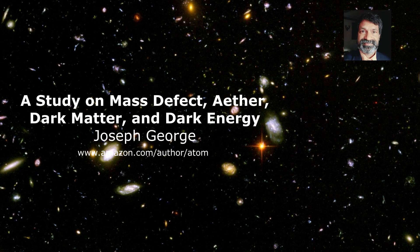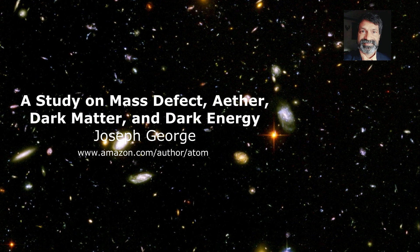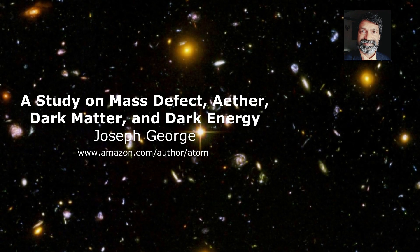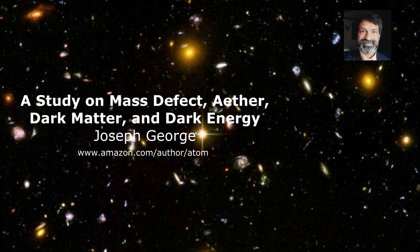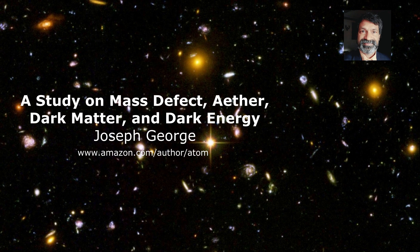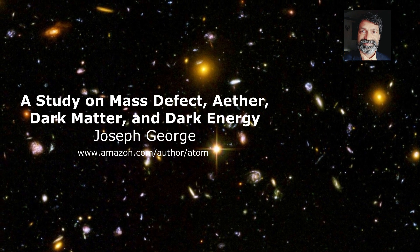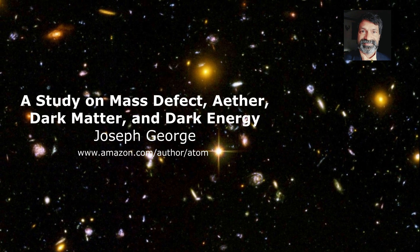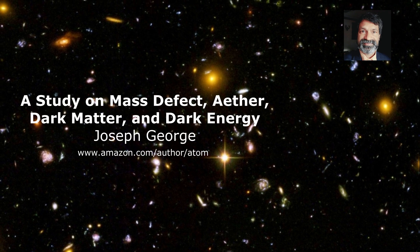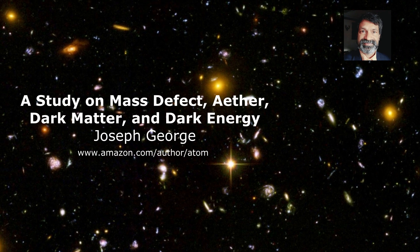I prefer to call it ether. Since ether is a form of matter, it is subject to gravitational attraction. Therefore, every massive body in the universe will be surrounded by a dense region of ether, with the density higher near the body and decreasing with distance. This dense region exhibits an optical property, causing the speed of light to vary as it passes through.